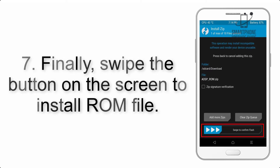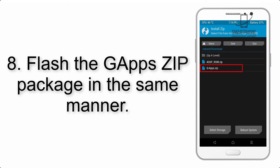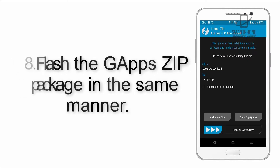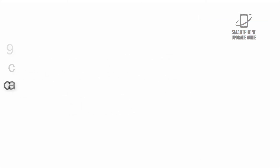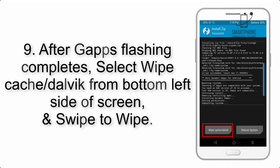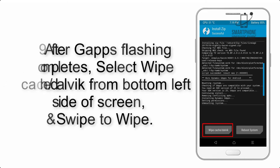Step 6: Navigate to the storage and select the ROM zip file. Step 7: Swipe the button on the screen to install the ROM file. Step 8: Flash the Gapps zip package in the same manner.